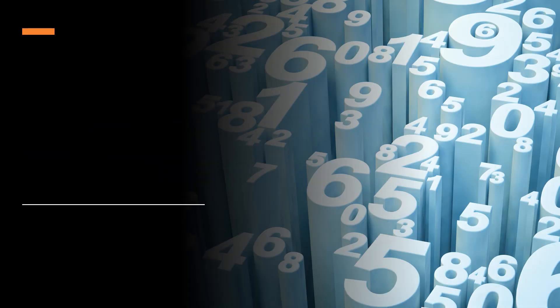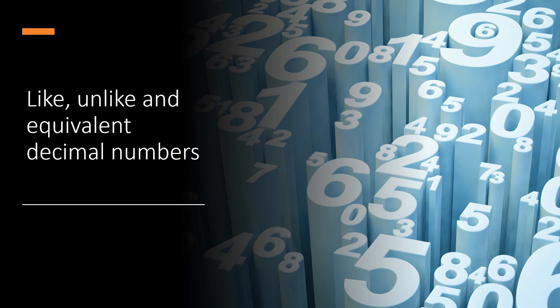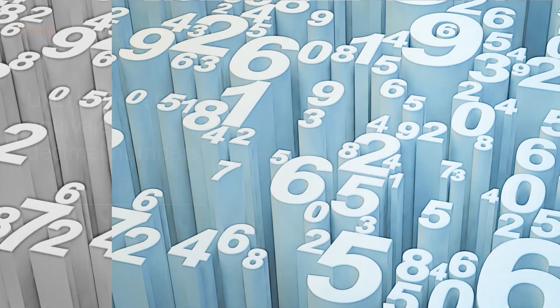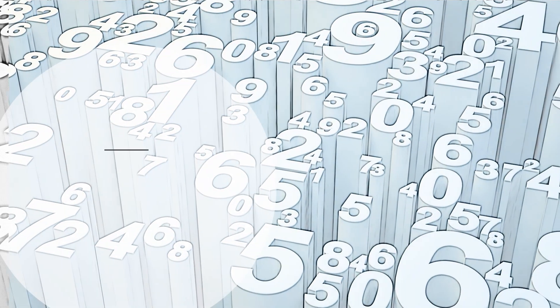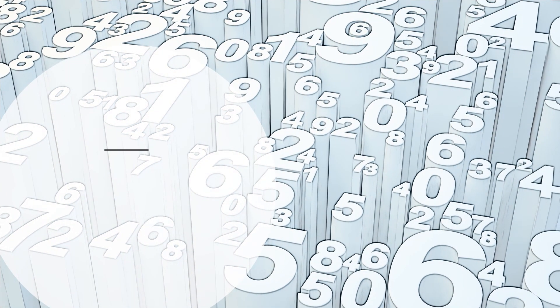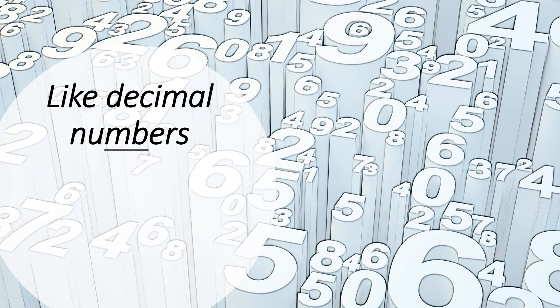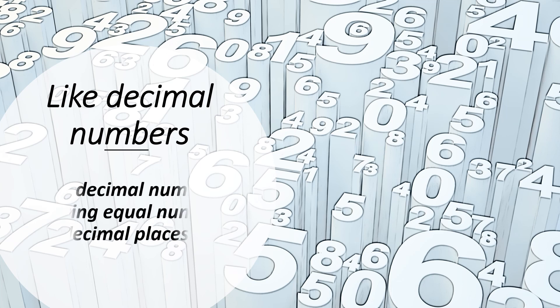Welcome students to this series on decimals. Today's topic is like, unlike, and equivalent decimal numbers. Let us understand what are like decimal numbers. Like decimal numbers are decimal numbers having an equal number of decimal places.